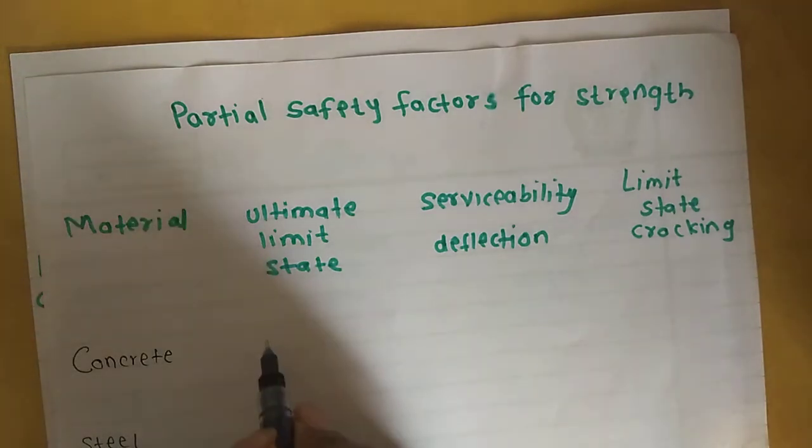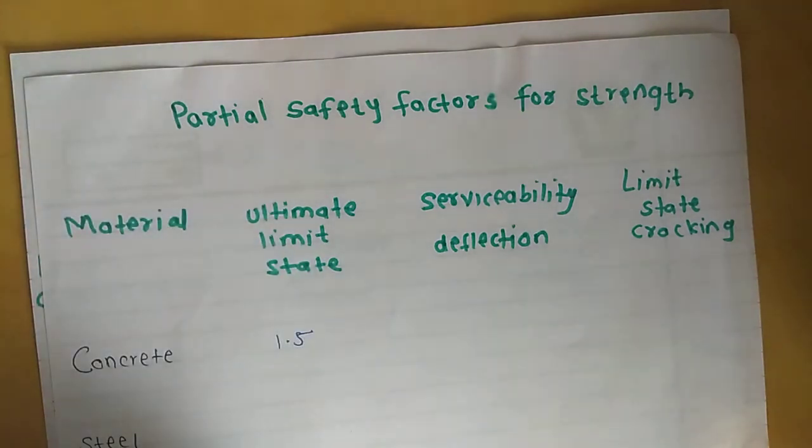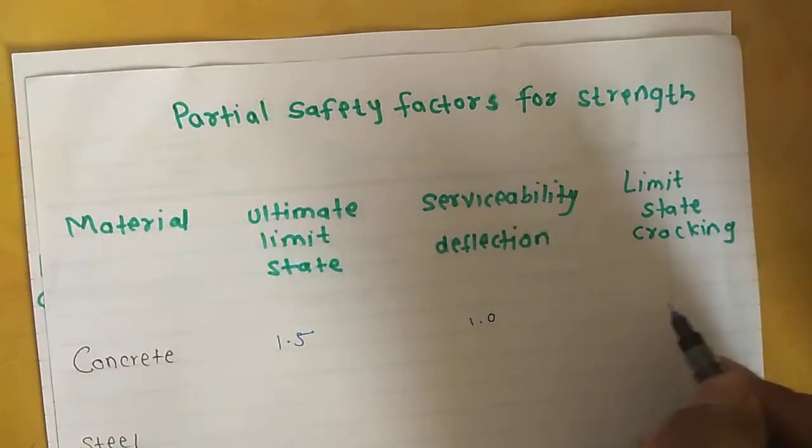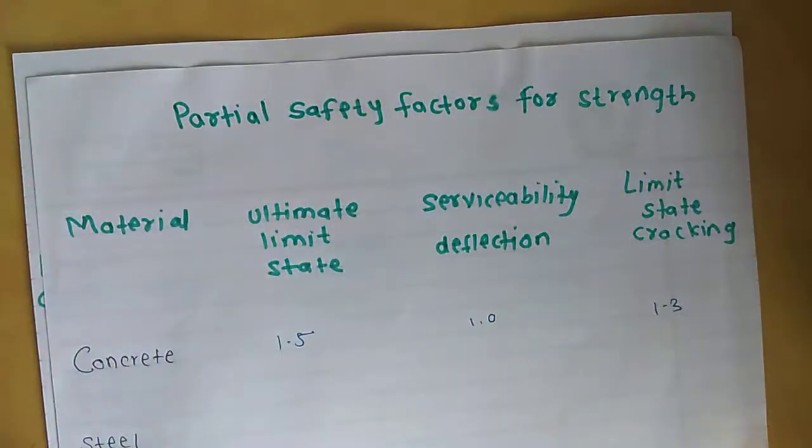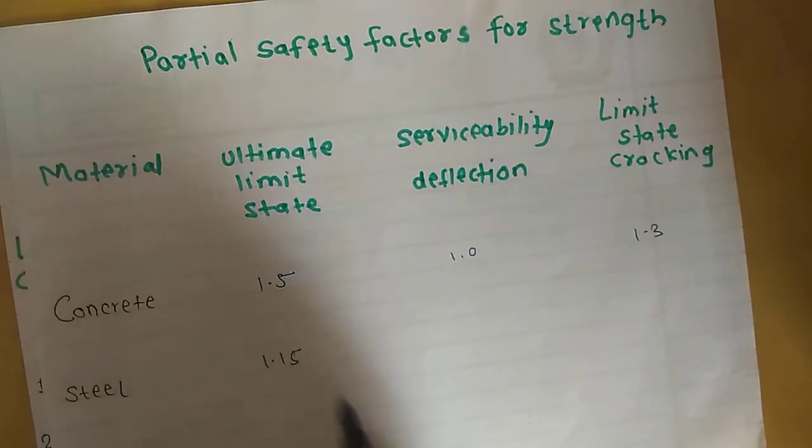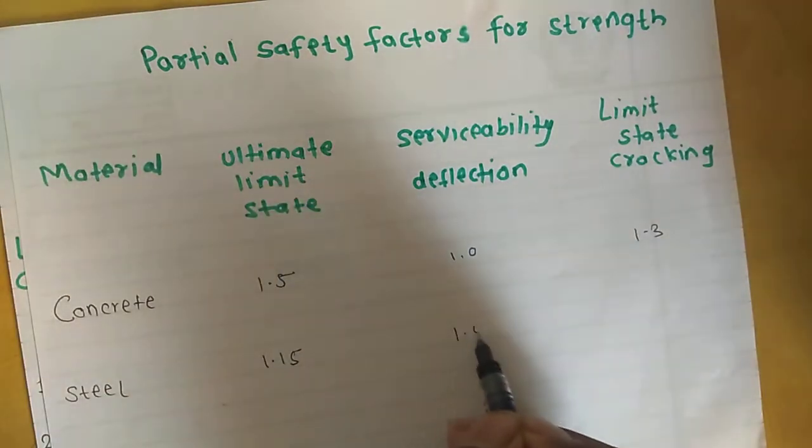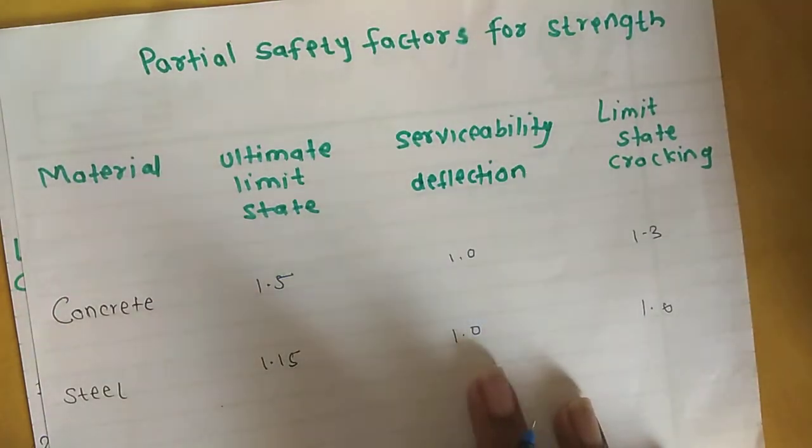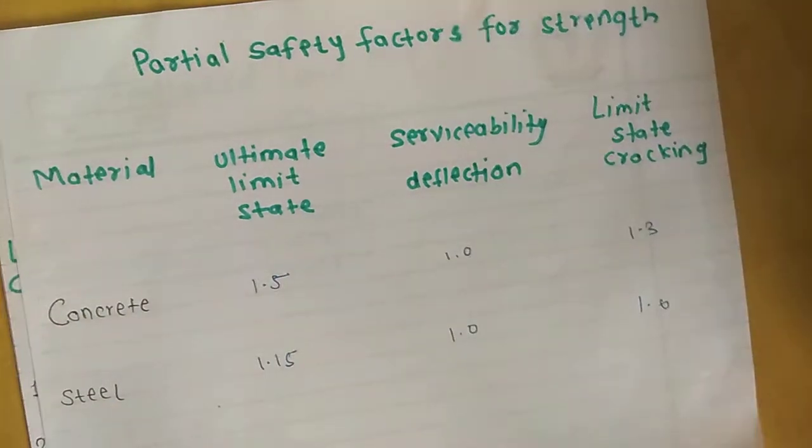For concrete, the ultimate limit state is 1.5, serviceability is 1.0, and for cracking it is 1.3. For steel, the factor of safety is 1.15, for deflection is 1.0, and cracking is also 1.0. These are referenced to IS-456-2000 concrete code.